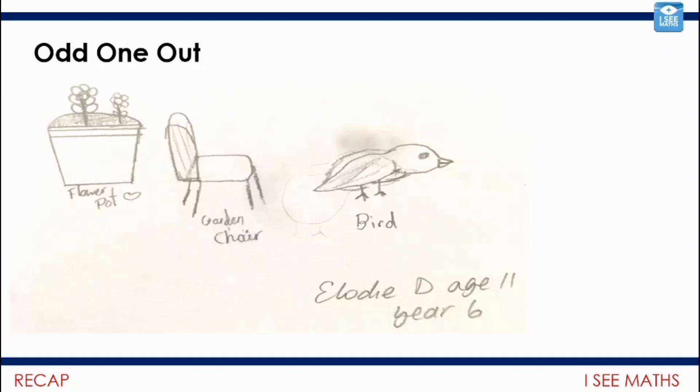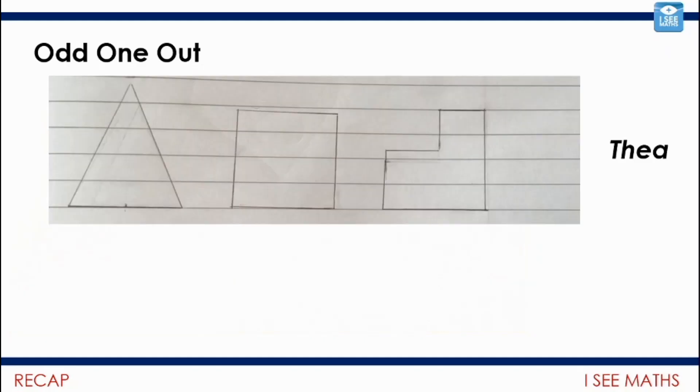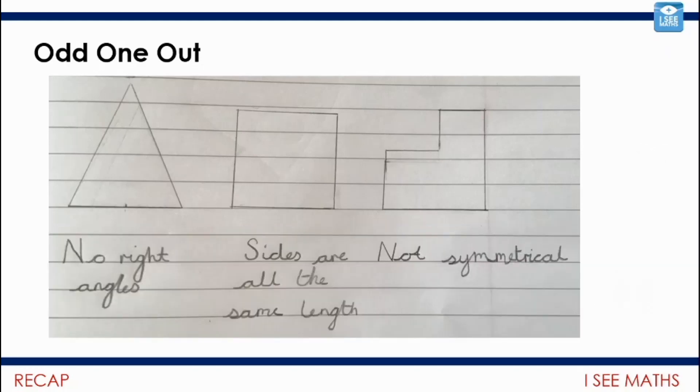Let's have a look at another one. We've got a really great shape one from Thea. So thank you, Thea, for this one. Which one's the odd one out here? Pause the video and have a go. For this one, Thea has given us the reasons. We've got the triangle, no right angles. The square, all the sides the same length, whereas the other two shapes have got different length sides. And then the hexagon on the right, this one is not symmetrical. The other two shapes have got lines of symmetry. Great example. Love that one. Thank you, Thea.